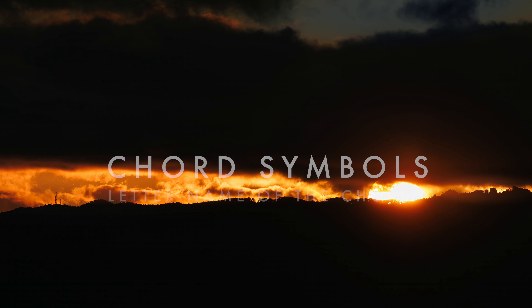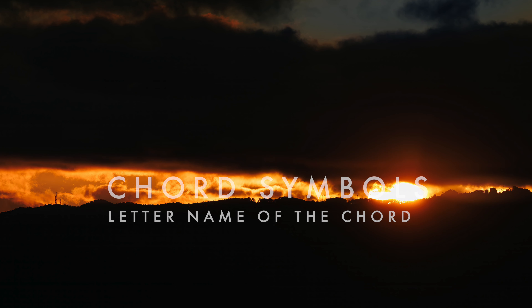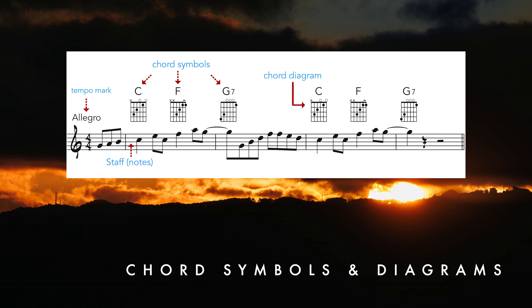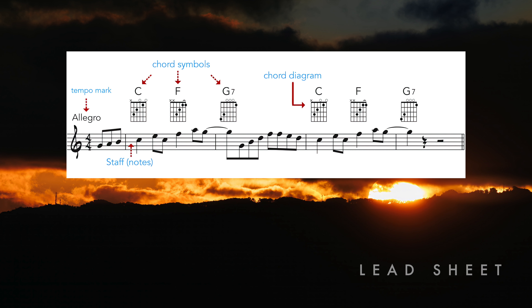In popular styles, chords are often indicated with chord symbols — in other words, the letter name of the chord. In such cases, chord voicings and rhythm are left up to the individual performers. Chords may also be indicated with grids known as chord diagrams — pictures of where to place fingers for a chord on a ukulele or guitar. When a melody is written with chord symbols above the staff, it is called a lead sheet.